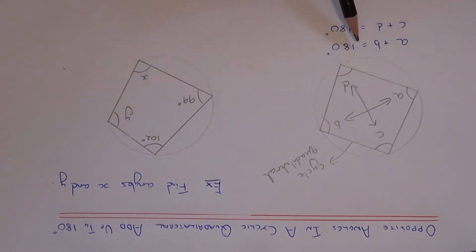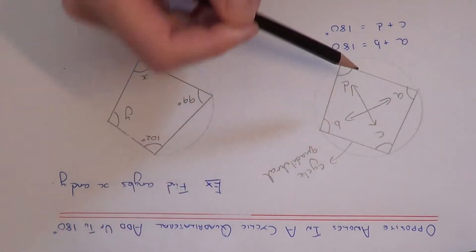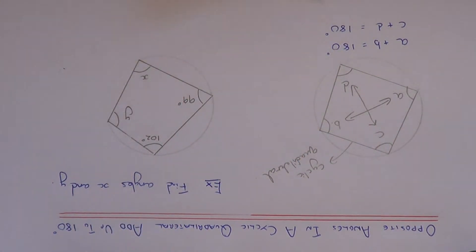So A plus B will give you 180 if you add these up and C plus D will also add up to 180 degrees. So let's do a quick example.